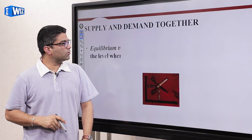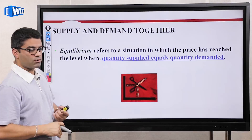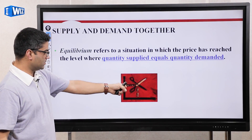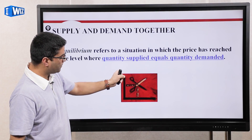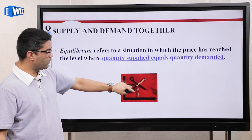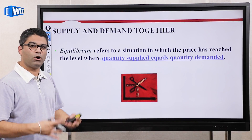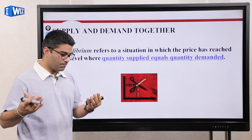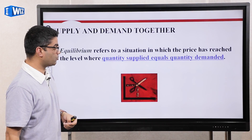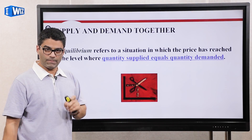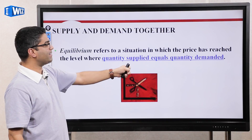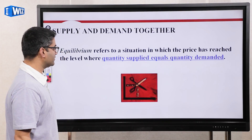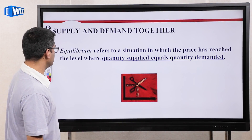Now we're going to put everything together and define what equilibrium is — both equilibrium quantity and equilibrium price. You know the supply curve is upward sloping and the demand curve is downward sloping. Equilibrium in a competitive market refers to a situation where the price has reached a point where quantity supplied and quantity demanded are equal. I'll do both a numerical and a graphical example to illustrate that point in just a few slides.